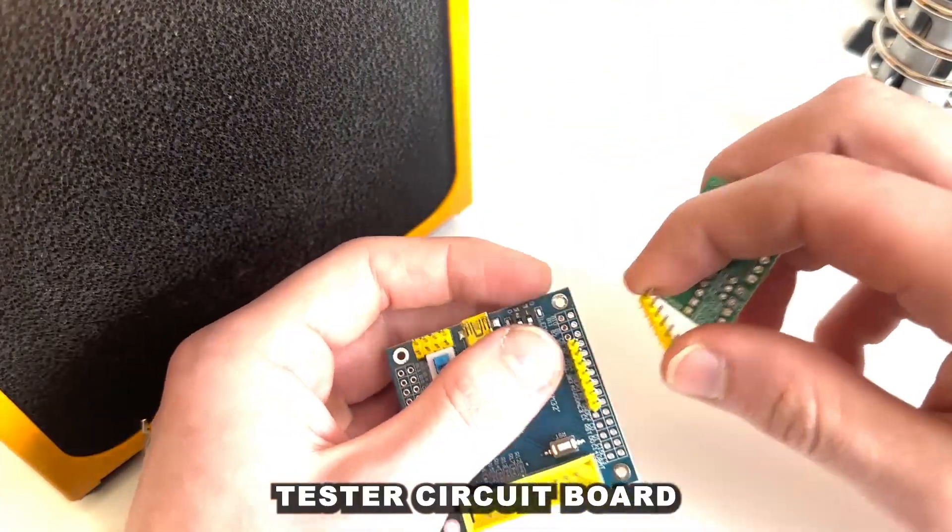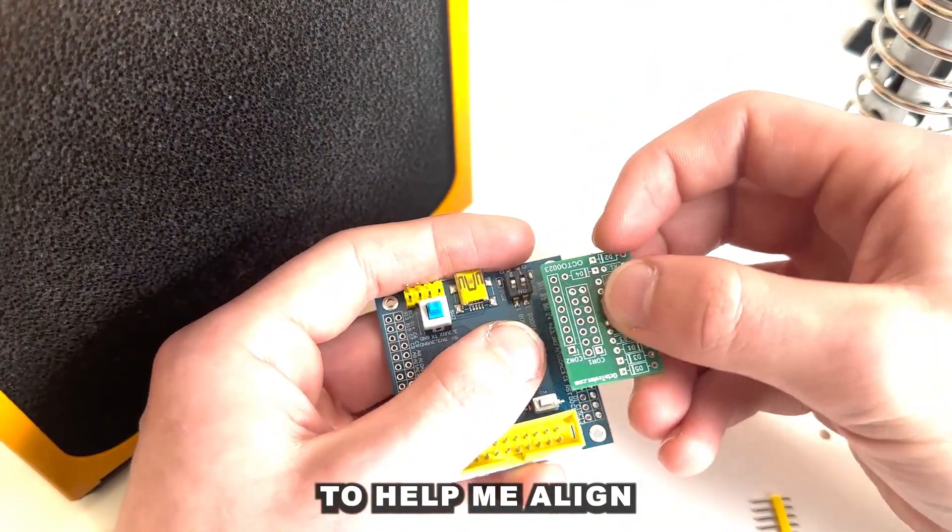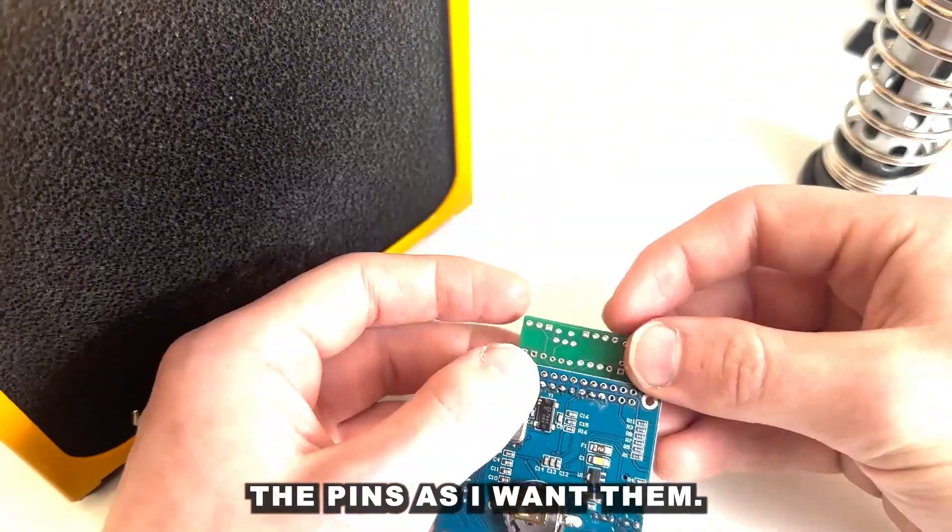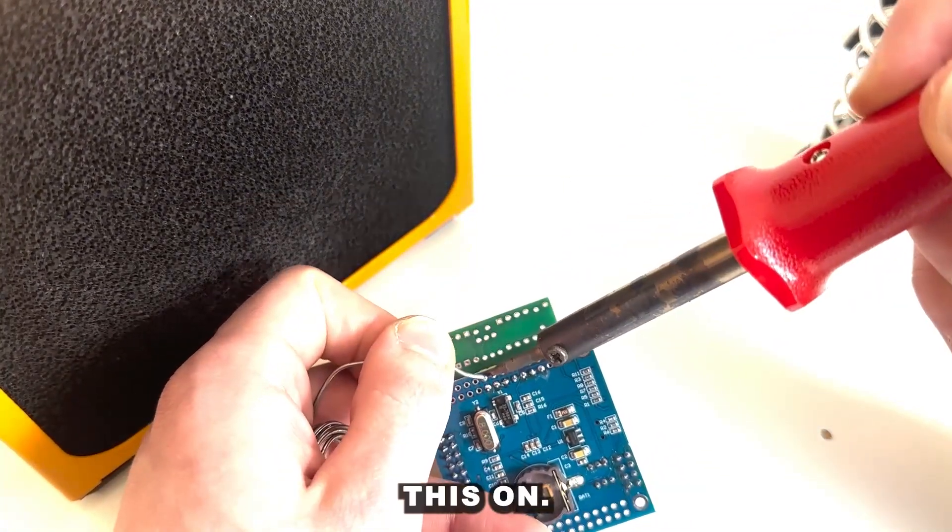Here I'm going to use the OctoTester circuit board to help me align the pins as I want them. And I'm going to solder this on.